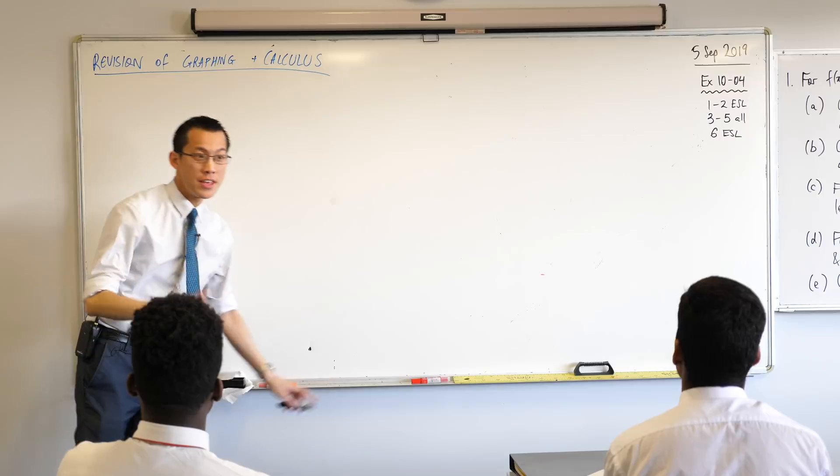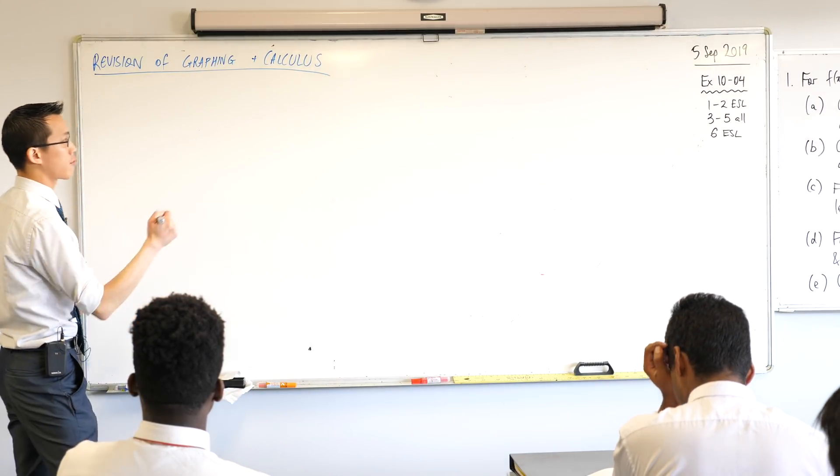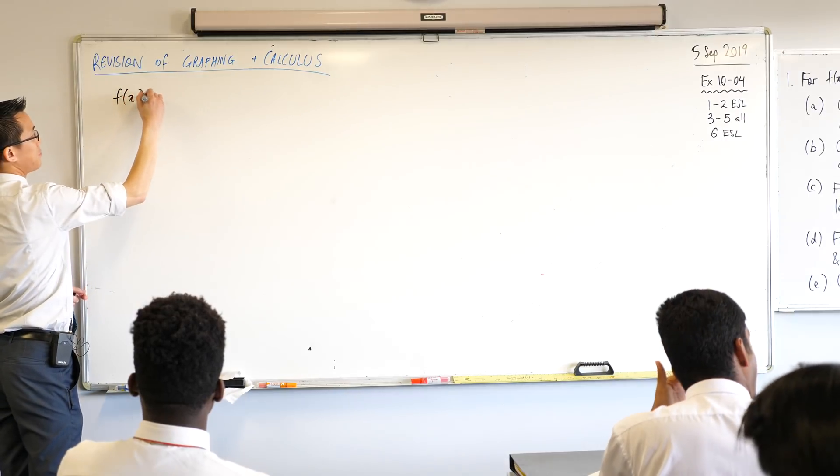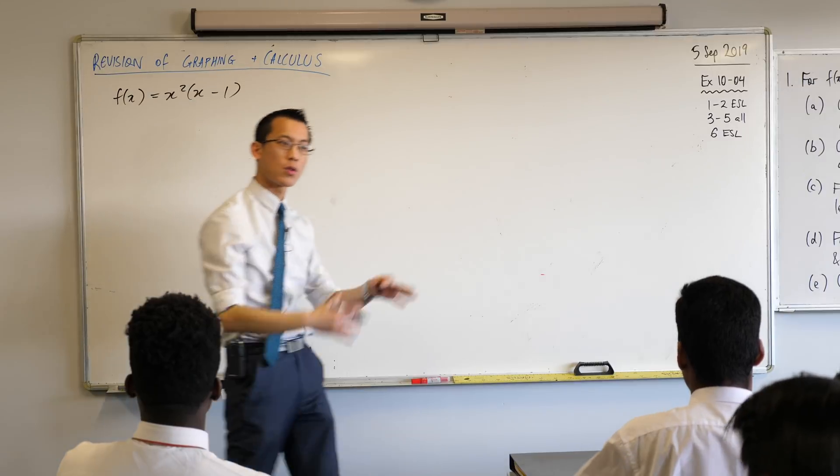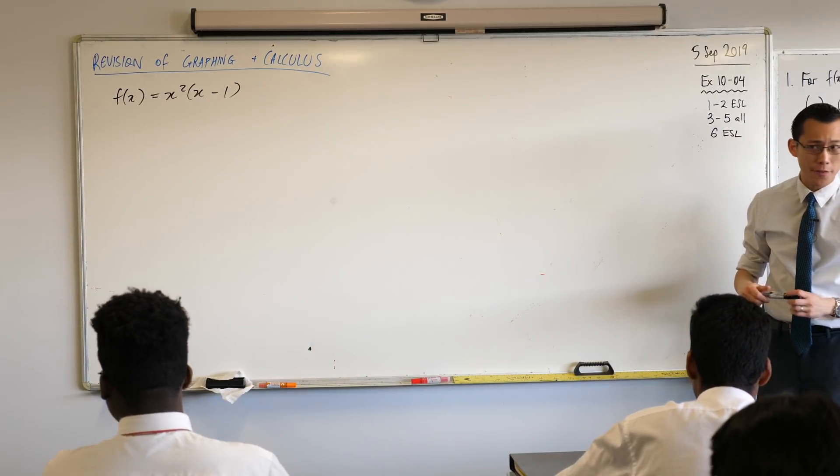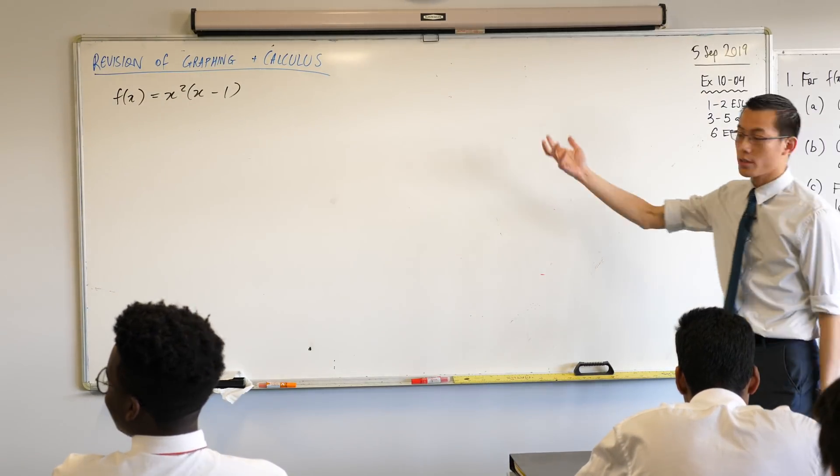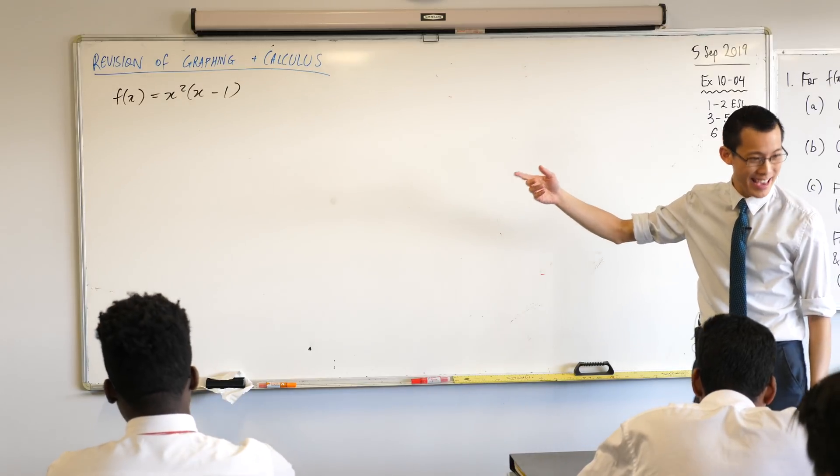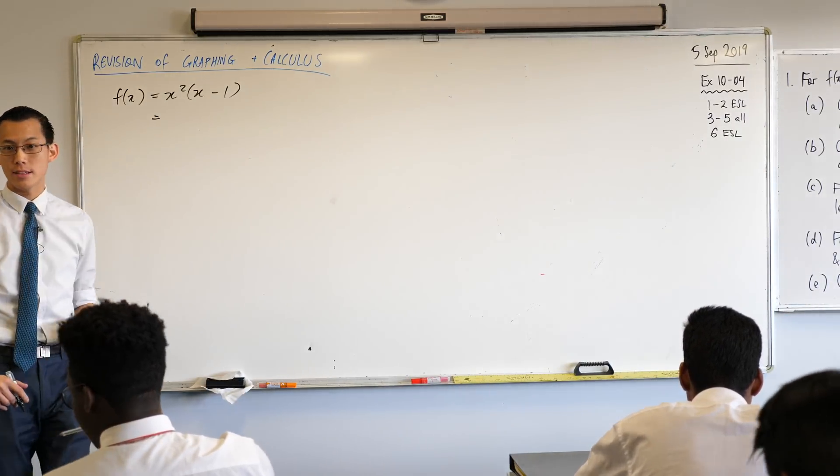You got the function right up the top, this one you should write down because we're going to be using it, working with it, all the way through. We've got f(x) = x²(x - 1). So what family of functions does this f(x), what family of functions does it belong to? What would you call it? It's a, very good, it's a cubic. You don't see x³ written anywhere yet, but we can on the next line if you like, show by expanding this that it's a cubic.